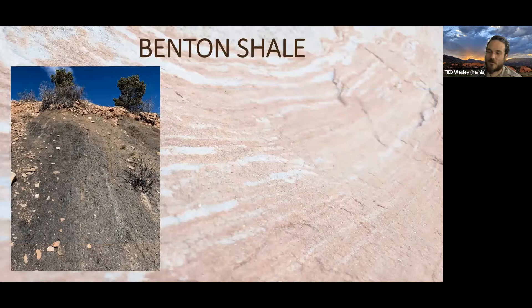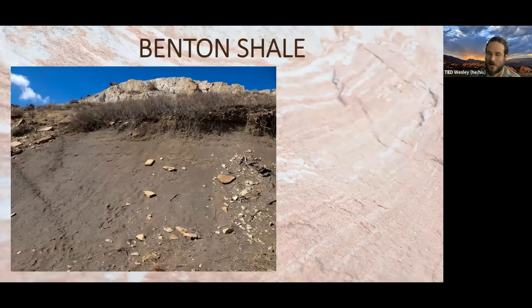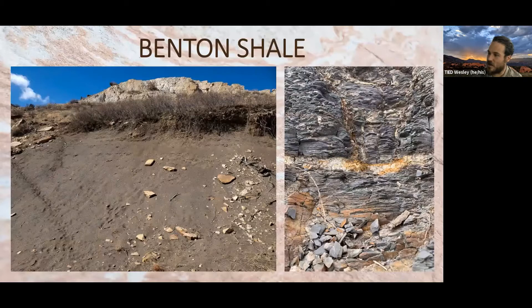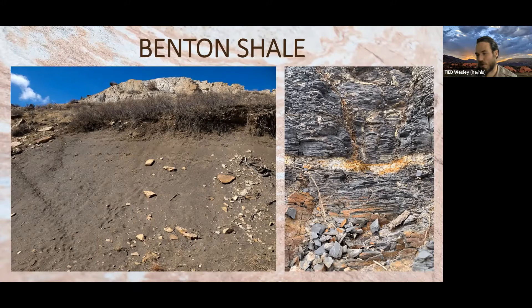One of the easy ways to identify the Benton Shale here is as basically an undifferentiated black shale. Shale erodes very quickly, falls and breaks apart — it's very soft and crumbly. But you can find small exposures; it's this very thin, flaky rock. Something really cool about the Benton Shale is we can use it for dating: that white band running through the middle is actually volcanic ash from volcanoes that erupted in California. This allows us to get a very precise date — about 77 million years old. We also find little fish scales.